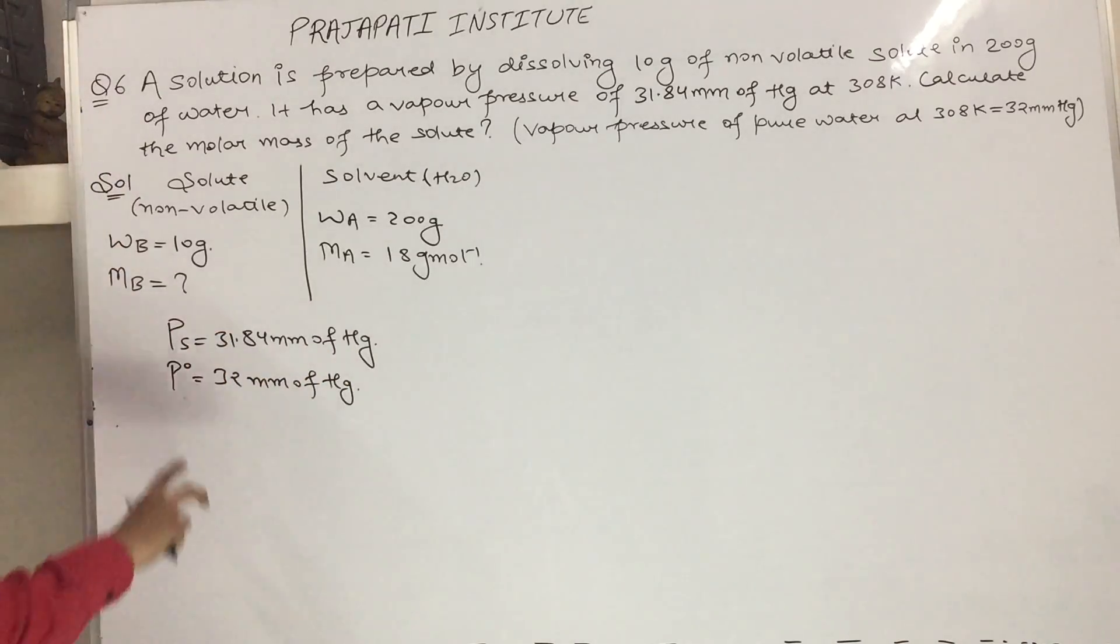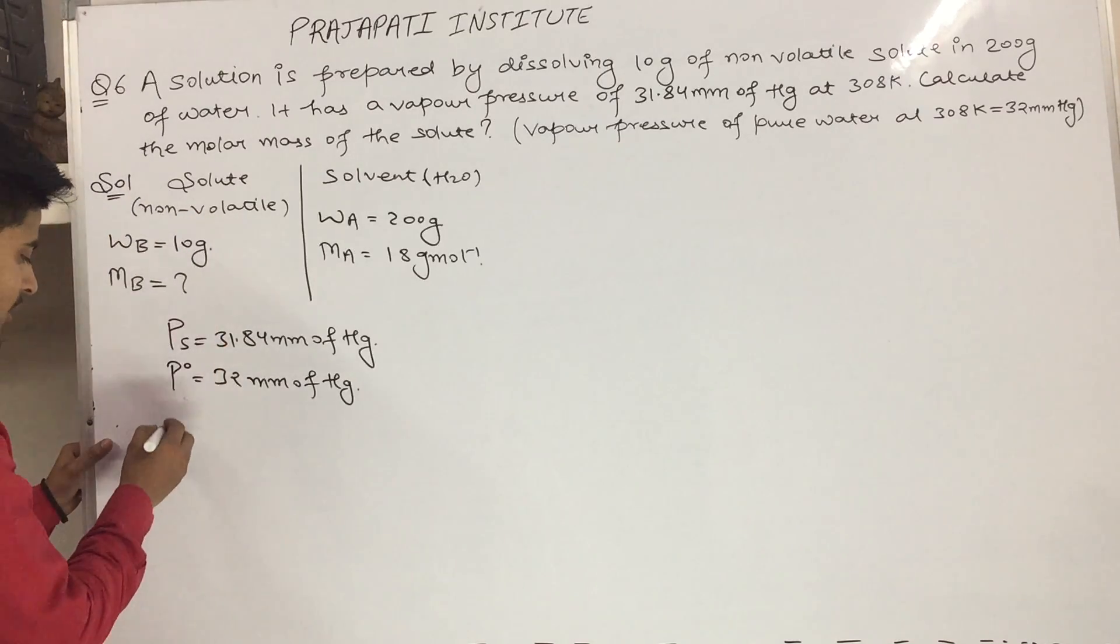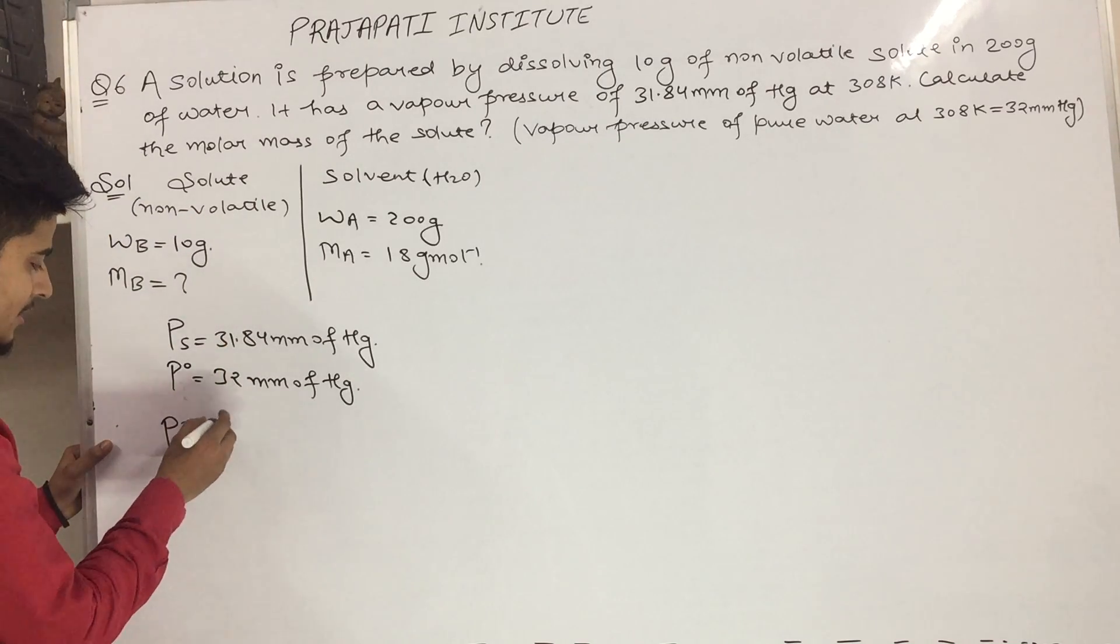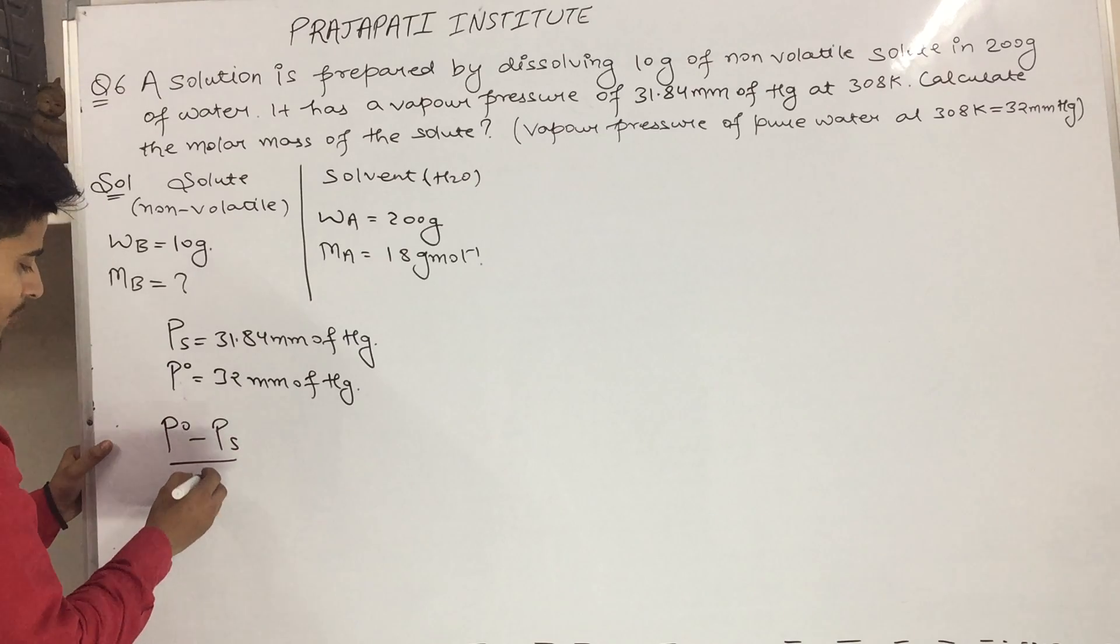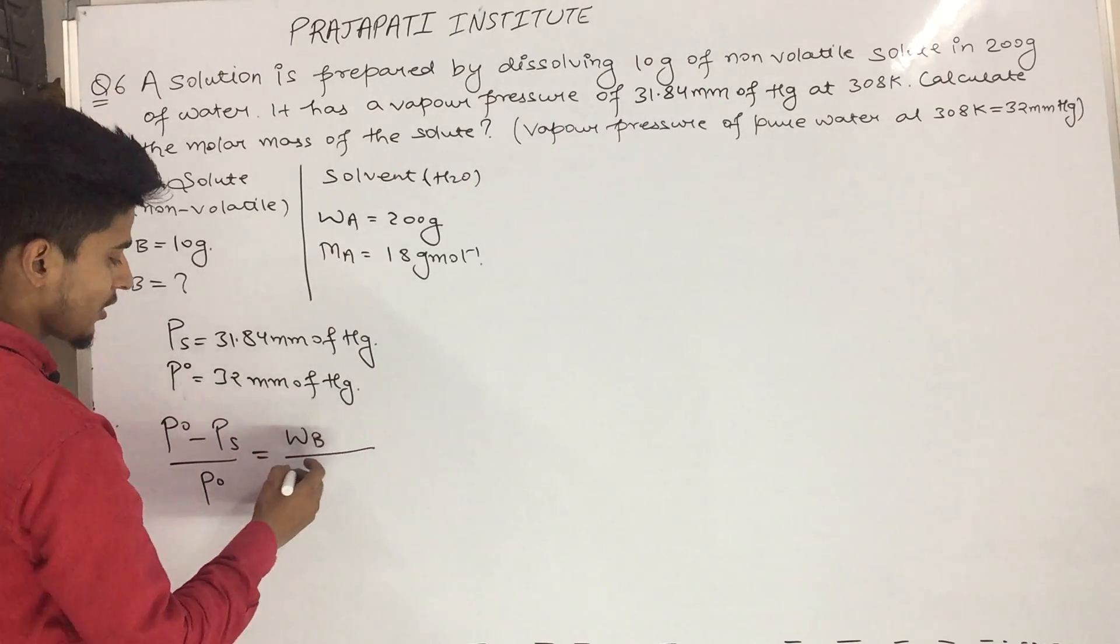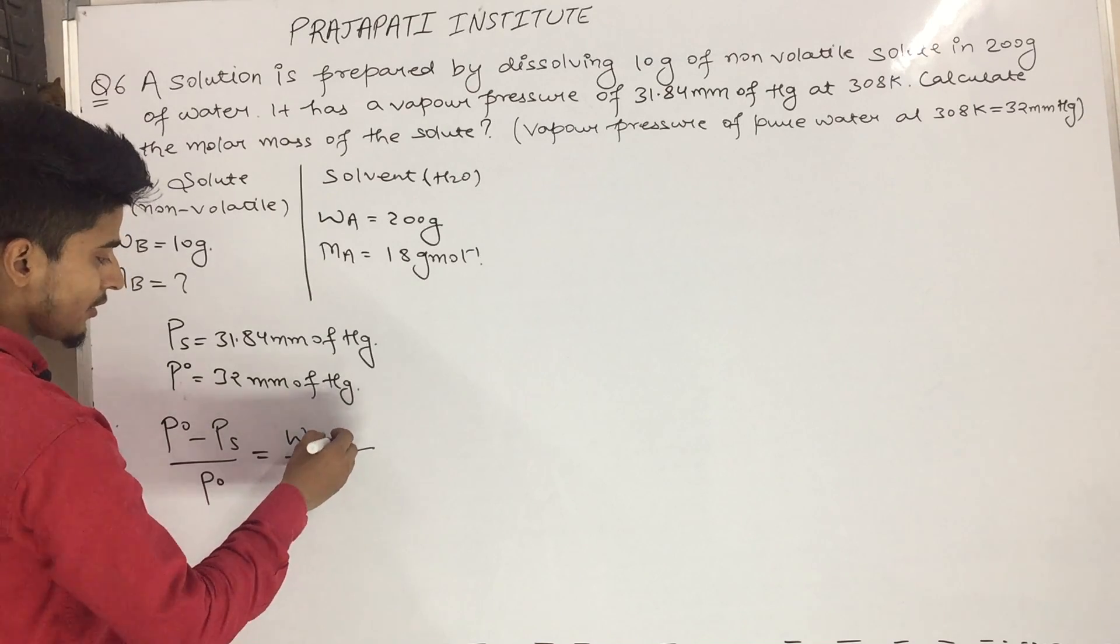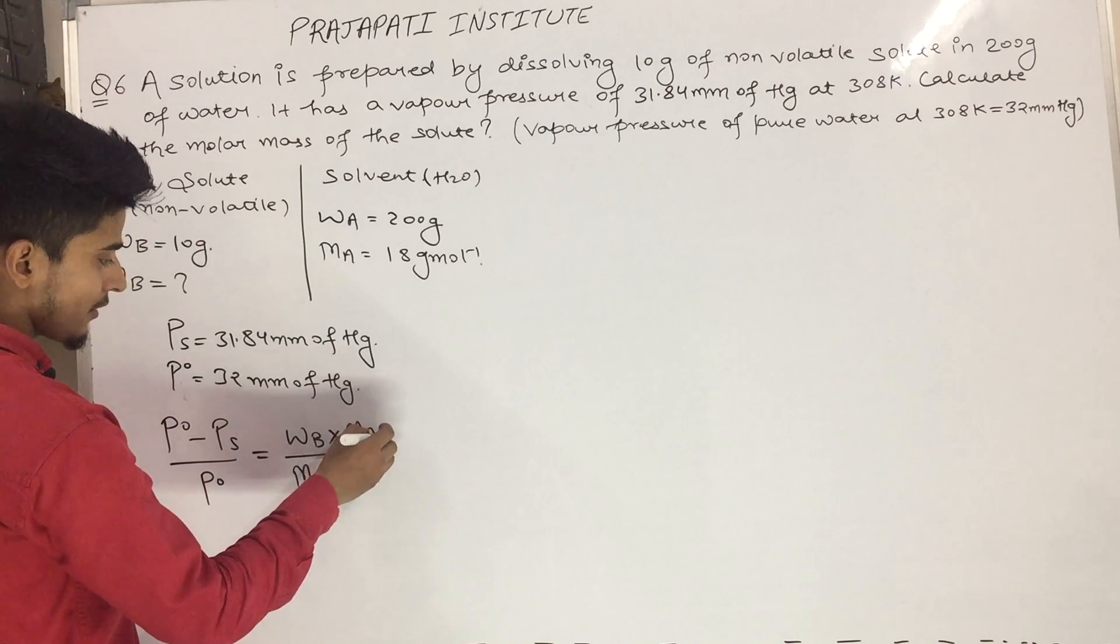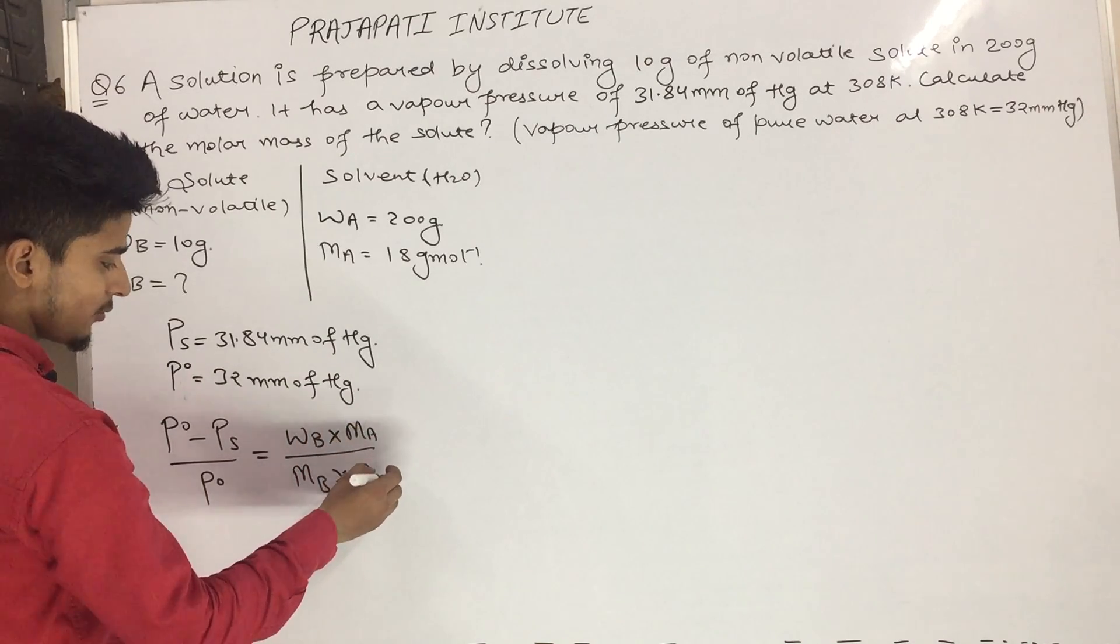We will use the RLVP formula which we have in the solution chapter. The formula is: p0 minus ps upon p0 is equal to wb upon mb into wa.